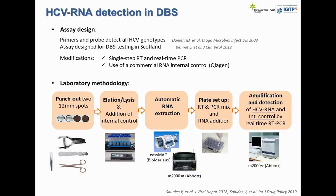The assay design is based on previous methods developed in Scotland by Bennett et al., with modifications to simplify the process. We perform a single-step retrotranscription and real-time PCR and use a commercial internal control. Basically, we punch out two spots — using a puncher that we sterilize by flaming between samples, though scissors can also be used. We then elute the blood from the paper card by incubation with lysis buffer and an orbital shaker, followed by automatic RNA extraction. PCR setup is performed manually, then amplification and detection occur in a single step for both the hepatitis C RNA and an internal control that is an unrelated RNA added to each sample to monitor the whole process. We also use positive and negative controls in each run.